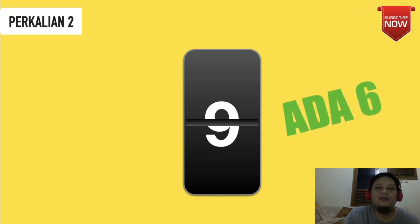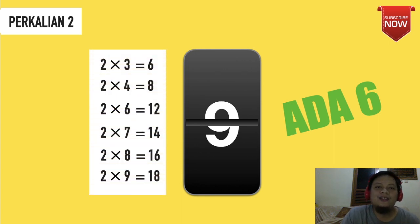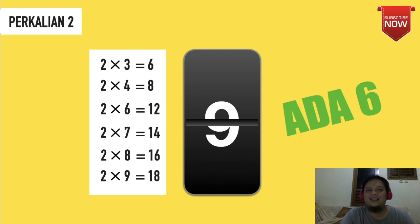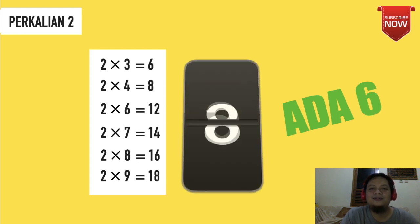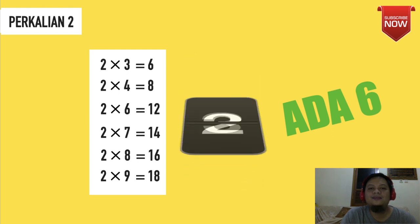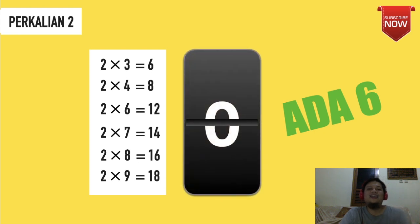Yang pertama adalah perkalian 2. Ada 6 perkalian yang harus kalian hafal: 2×3=6, 2×4=8, 2×6=12, 2×7=14, 2×8=16, 2×9=18. Kita akan sama-sama menghafal. Saya akan kasih waktu 10 detik. Dimulai dengan kata start. Siap. Oke, kita mulai menghafal. Start. Oke, time's up.